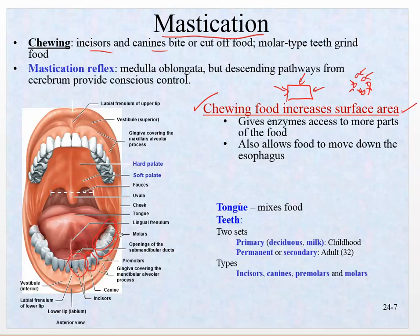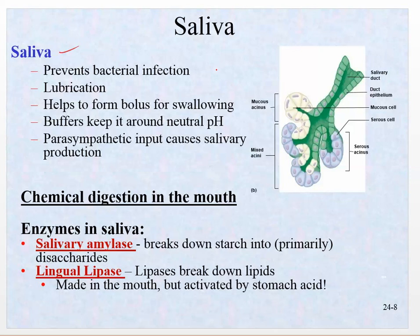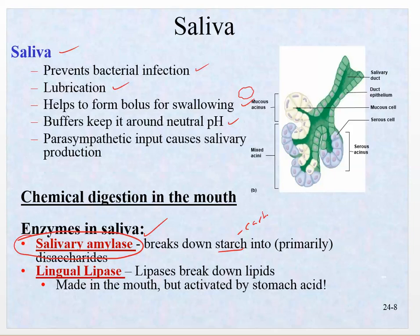Saliva does a lot of things: it prevents bacterial infections with immune-type cells, provides lubrication, and helps form the bolus. If you eat something like a piece of cake that's a little dry, you mix it with saliva to form that bolus, push it to the back of the throat, and then you have deglutition — swallowing. Saliva has buffers to keep it around a neutral pH, which is important because something like citrus is very acidic, and mixing with saliva gives it a friendlier pH. That's important because one active enzyme works best at around a neutral pH: salivary amylase.